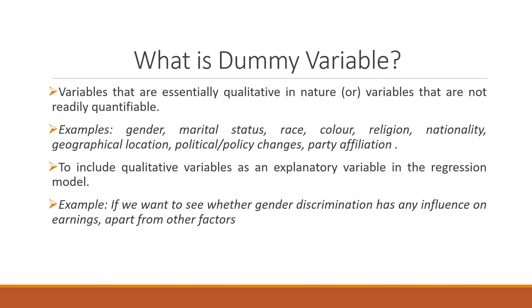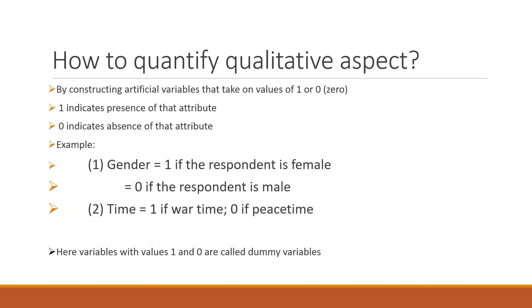To include such variables as an explanatory variable in the regression model, we introduce the concept of a dummy variable. For example, if we want to see whether there is gender discrimination influencing earnings, we construct an artificial variable taking the value of 1 or 0. 1 indicates the presence of that attribute, 0 indicates the absence. For instance, gender equals 1 if the respondent is female, 0 if male. Similarly, time equals 1 if wartime, 0 if peacetime. Variables with values 1 and 0 are called dummy variables.